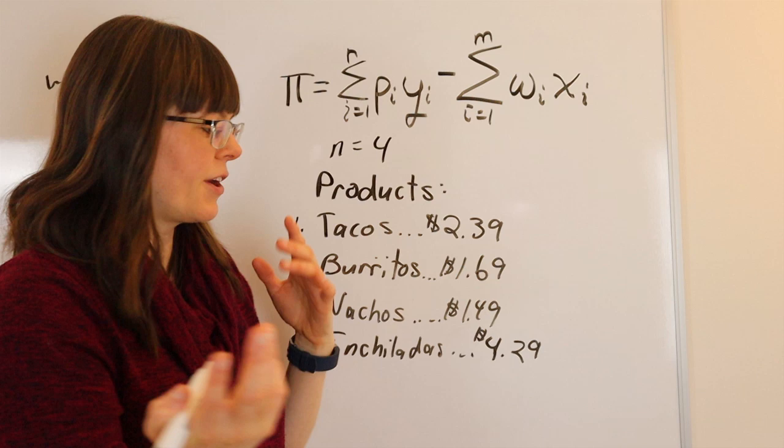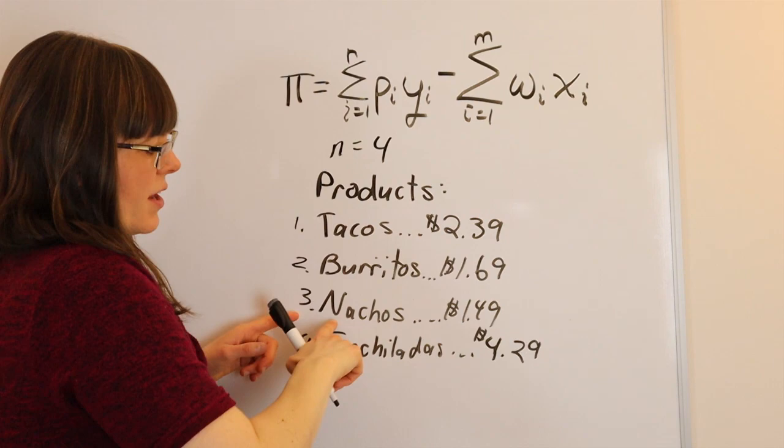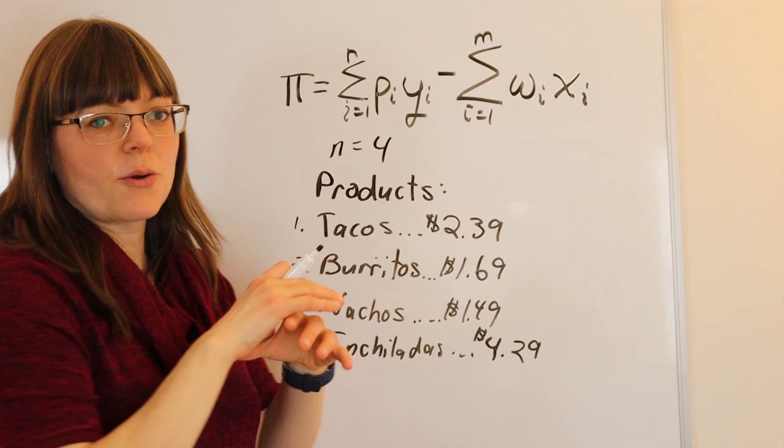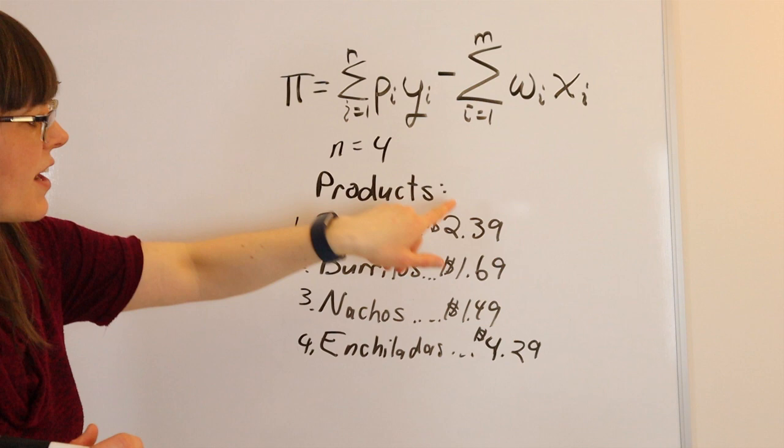Plus, we move on now to product number three, the price of nachos times the quantity of nachos we sell, 300 nachos. And so it really is just adding up the total revenue over a number of different products where each product has a unique price, and you just multiply it by the quantity that you sell and produce.